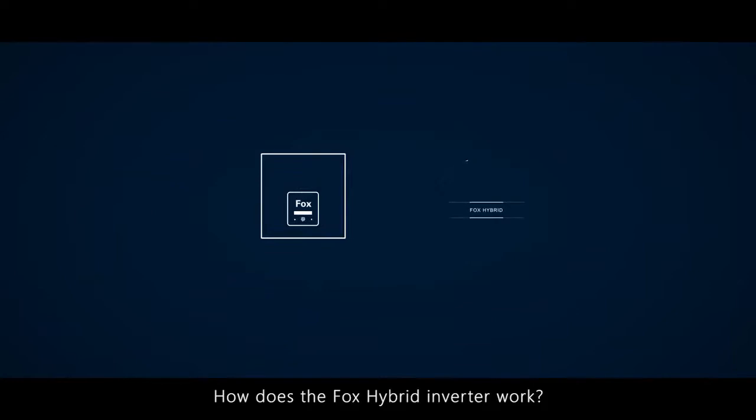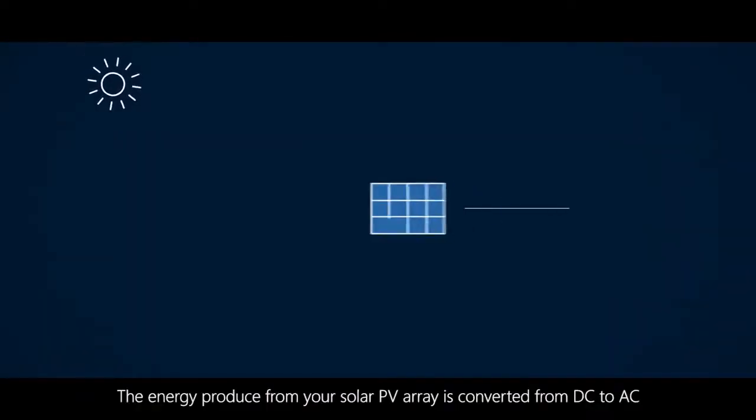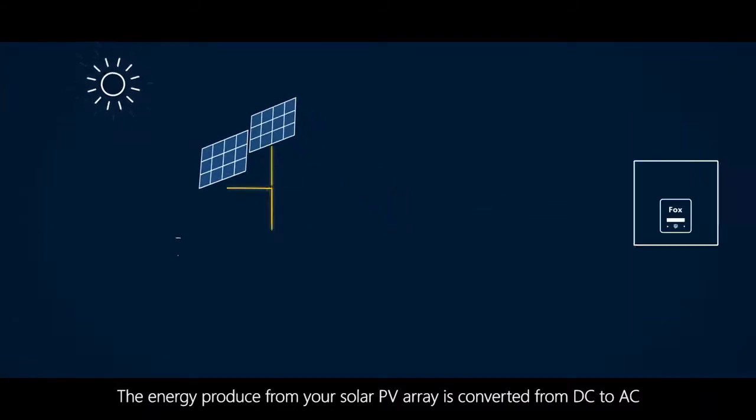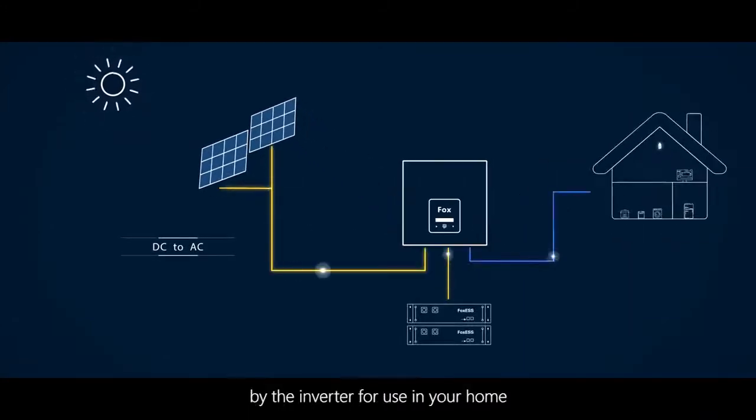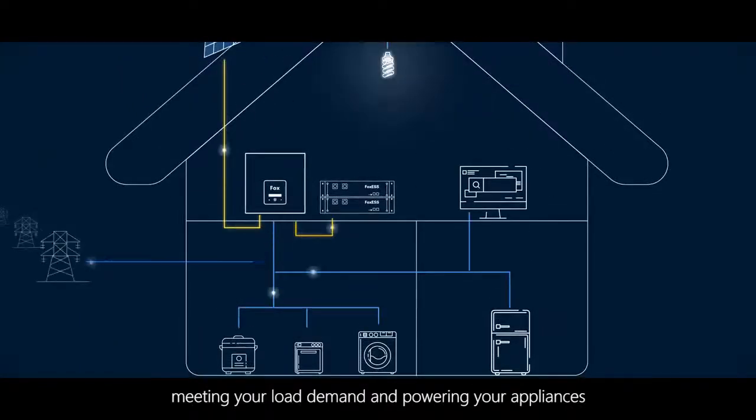How does the Fox hybrid inverter work? The energy produced from your solar PV array is converted from DC to AC by the inverter for use in your home, meeting your load demand and powering your appliances.